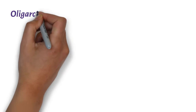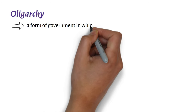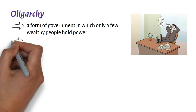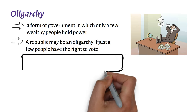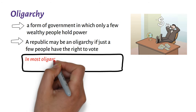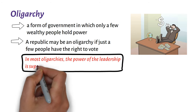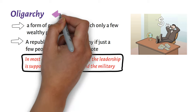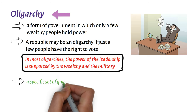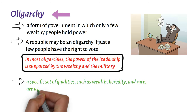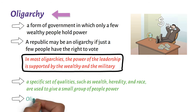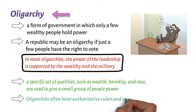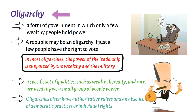On Oligarchy. An oligarchy is a form of government in which only a few wealthy people hold power. A republic may be an oligarchy if just a few people have the right to vote. In most oligarchies, the power of the leadership is supported by the wealthy and the military. Hence, in oligarchy, a specific set of qualities, such as wealth, heredity, and race, are used to give a small group of people power. Oligarchies often have authoritative rulers and an absence of democratic practices or individual rights.